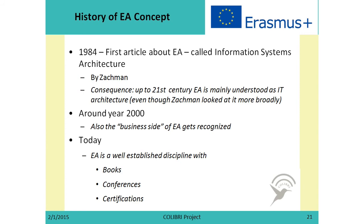The first time Enterprise Architecture as a term appeared was around 1984, when Zachman came up with Information Systems Architecture. By the 21st century, Enterprise Architecture was mainly understood as IT Architecture, even though Zachman looked at it more broadly. Only around the year 2000 did the business side of Enterprise Architecture get recognized, and people started to develop these models in more detail and with more enthusiasm.